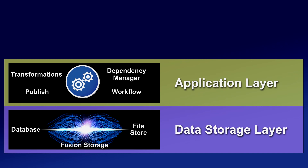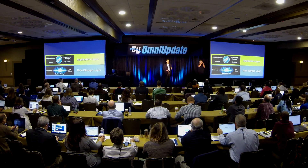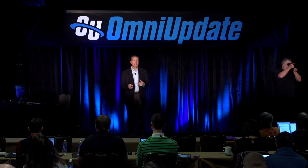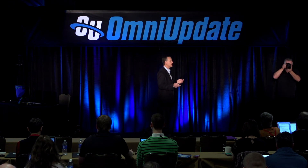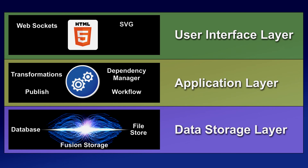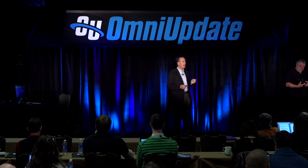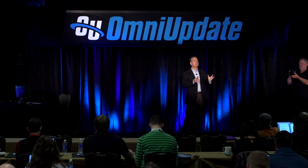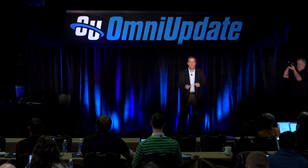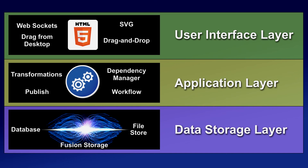The application layer is where all the work happens — content transformation, publishing, workflow, dependency manager, all those things that process in the system. The application layer provides all the technologies that we needed to build upon for the application, gadgets, and more. Right on top of that is the user interface layer. Because of HTML5, this is where it got really interesting for version 10. This is where you get drag and drop, drag from the desktop. We use WebSockets, SVG — all these modern technologies — and we really took a huge leap forward from version 9 to version 10 because of that.